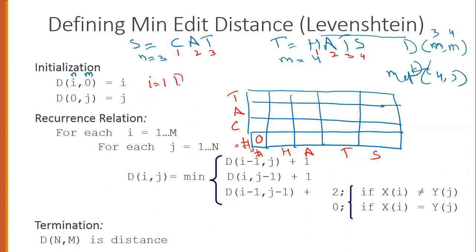When we compute d[i,0], the cost becomes 1 for i=1, meaning we map 'c' to null by deleting the first character, cost 1. For d[2,0], we delete 'c' and 'a' to map to the null string, cost 2. For d[3,0] equals 3, meaning we delete all three characters 'c', 'a', 't' to reach the null string, cost 3.